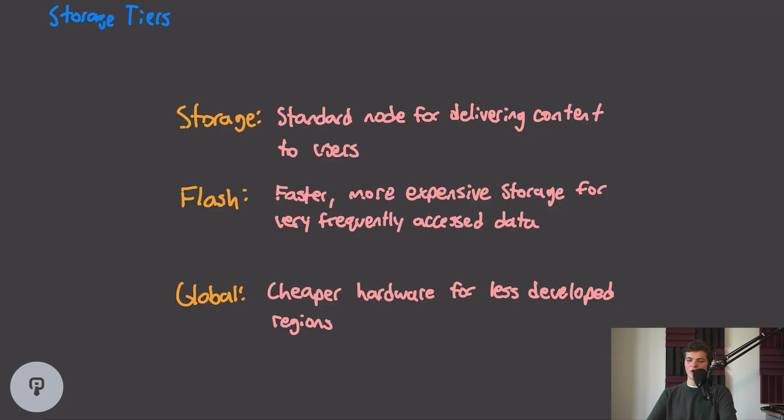So now, with so many nodes deployed across so many geographic locations, it's really important for Netflix to optimize the cost of infrastructure at these locations. To make sure that they're doing this, Netflix has three different tiers of Open Connect appliances that they deploy. They have the standard storage tier, and this is the standard storage node that's used for delivering content to end users. In certain high traffic areas, they can also use the flash tier, which uses SSD storage, which is more expensive but much faster, and this can be used for caching some of the really frequently accessed data that requires a faster storage medium. And finally, there's the global tier, which uses cheaper hardware and is more suitable for regions with less developed internet infrastructure. This tier can reduce the cost of deploying Open Connect appliances while still optimizing network traffic using this architecture.